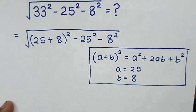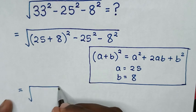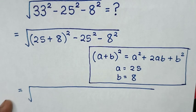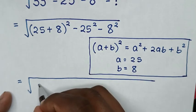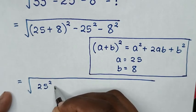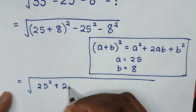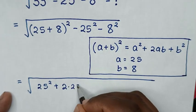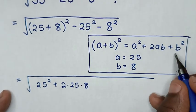Then, the next step, it will be equal to square root of a square, it will be 25 square, then plus 2ab. So, it will be 2 times a is 25 times b is 8, then plus b square.